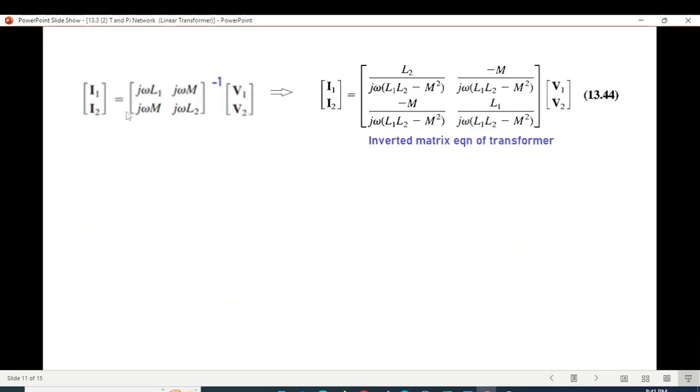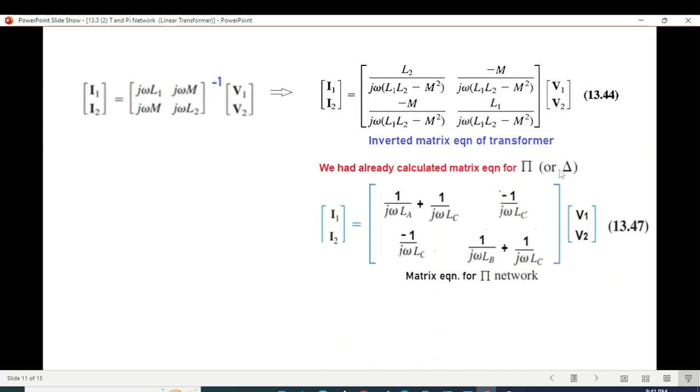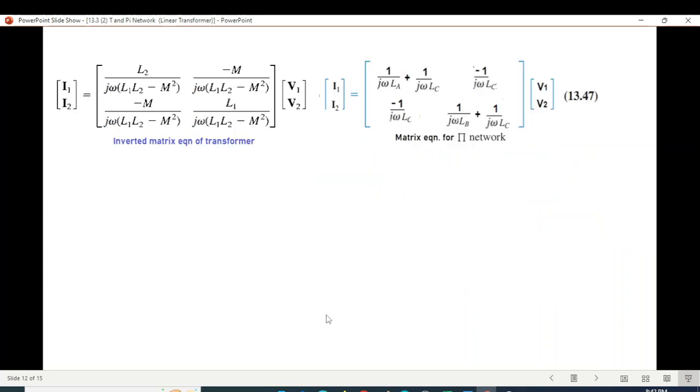So this will become our inverted matrix equation. And so after inversion, this will look like this. Now this is the transformer equation inverted. We had already calculated the matrix equation for Pi. So this is the matrix equation. Now we are ready to compare. So first of all, this looks easier, so we'll compare this top right. So we write it here. And from here, we write this term. And simplifying, we can find Lc to be this value here. You can pause the video and just go step by step.